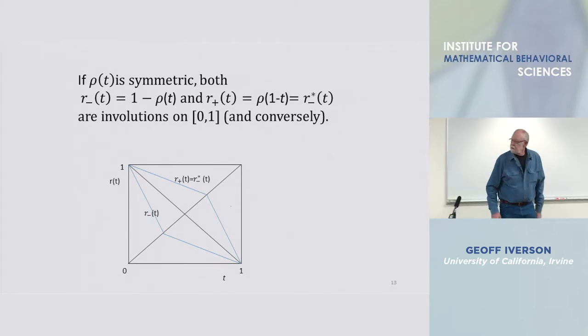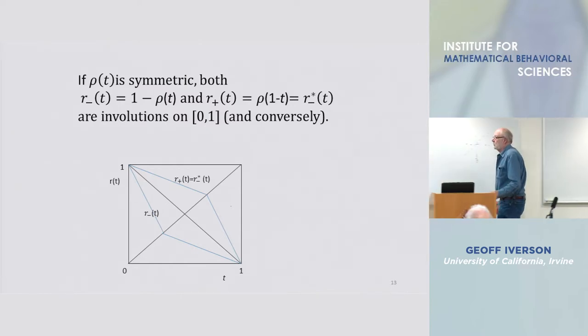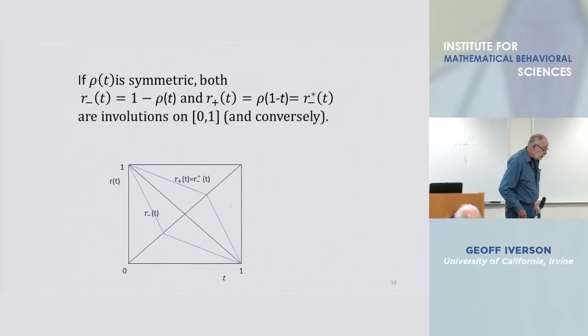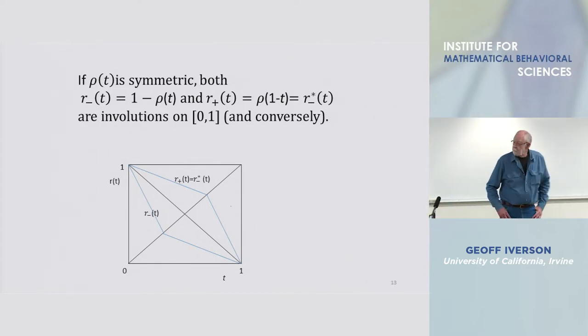under composition so r plus composed with itself is just the identity and same with r minus. And when the ROC is symmetric, r plus is the dual to r minus, and each of them is an involution.